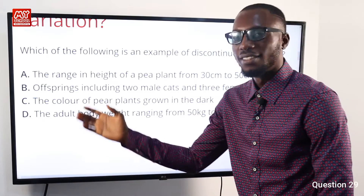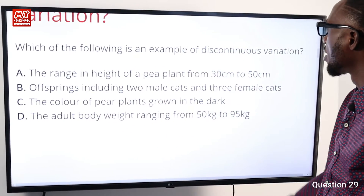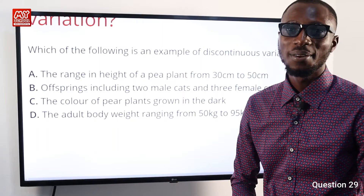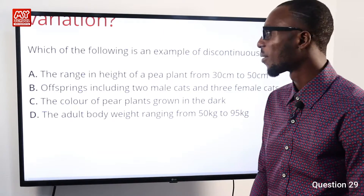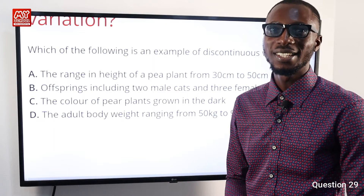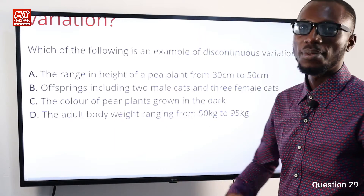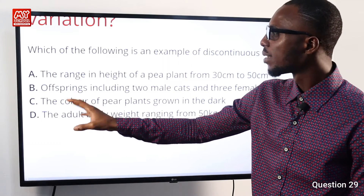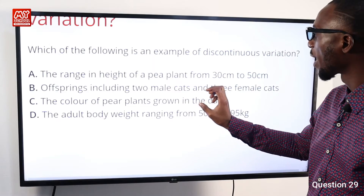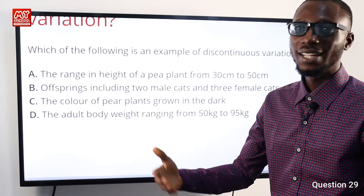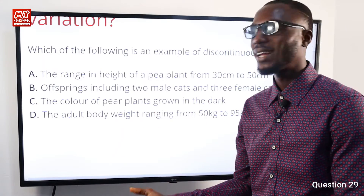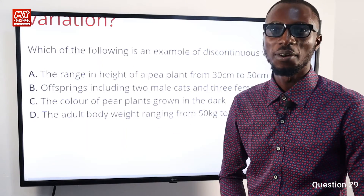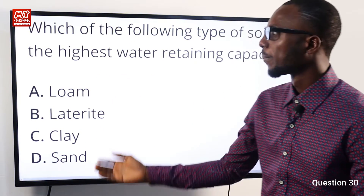Question 29: Which of the following is an example of discontinuous variation? Discontinuous variation includes blood group, resistance to bacteria, and genetic disorders — differences in character that offspring carry. Option B describes offspring including two male cats and three female cats, where the next generation might be two male and two female cats. This is an example of discontinuous variation, so option B is very correct.